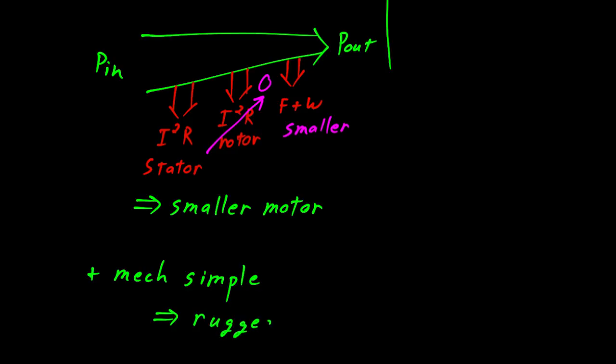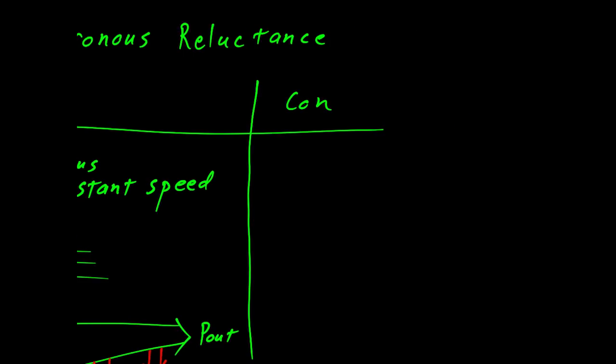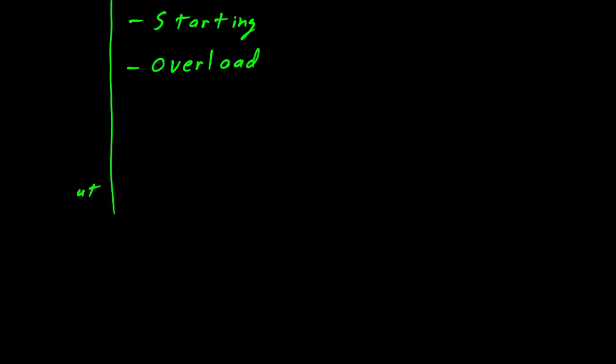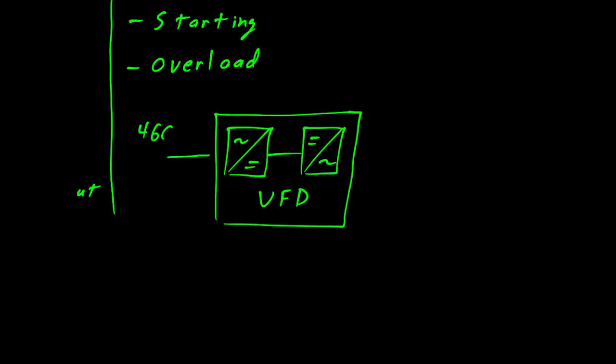On the other side of this table, we have two problems: one is the starting problem, and the other is the overload problem. Actually, in fairness, I'm not sure these are problems anymore, because both are solved with modern electronics. Almost every synchronous reluctance motor is going to include a variable frequency drive, where we take the incoming AC, convert it to DC, and then we have a frequency inverter to take the DC and convert it back to AC. The whole thing is enabled with a little bit of feedback. That allows the inverter in the variable frequency drive to provide whatever signal is necessary to operate the motor.